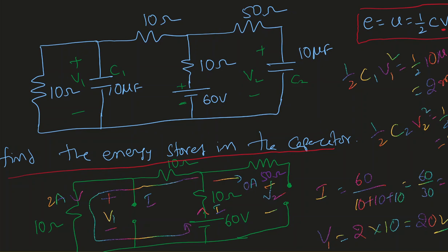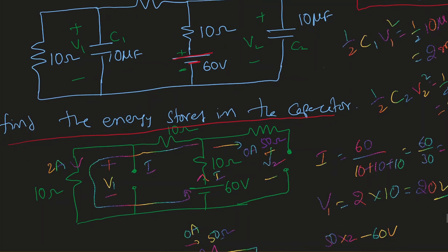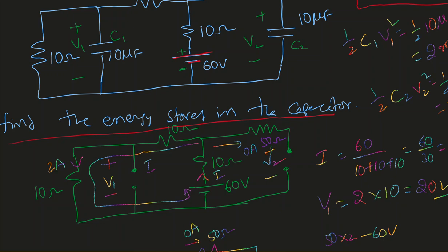It's a DC circuit here — how do I know? The source is DC. In DC, once capacitors are fully charged, once the transient state has passed and they are in steady state — that transient state is only a few milliseconds, and steady state is over a long time — in steady state, the capacitor acts like an open circuit.